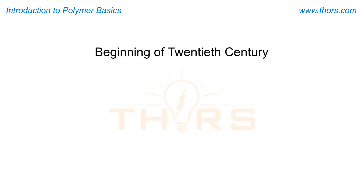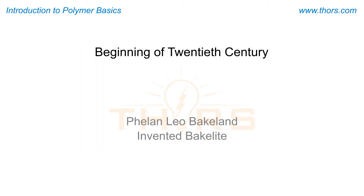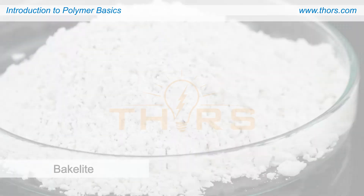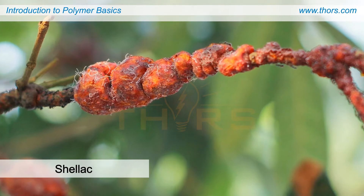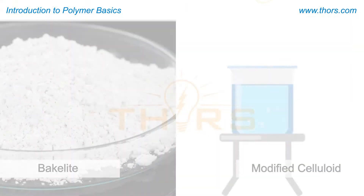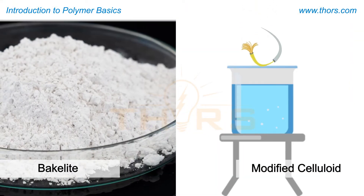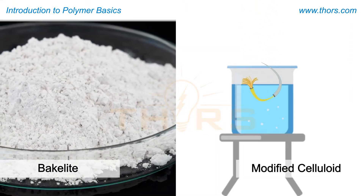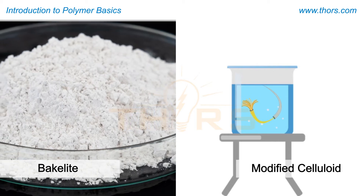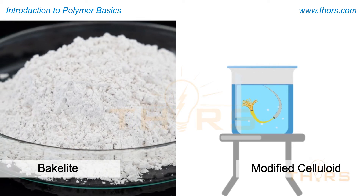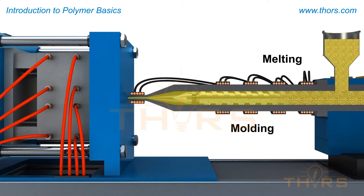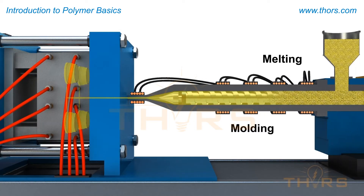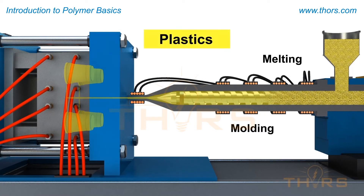Later, at the beginning of the 20th century, Leo Baekeland invented an entirely synthetic material, bakelite, as a substitute for shellac. Hyatt's and Baekeland's inventions heralded the advent of synthetic polymers. These synthetic polymers were very versatile and could be melted and molded to a desired shape, becoming a new class of materials called plastics.